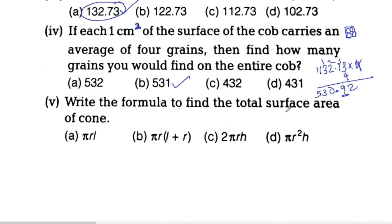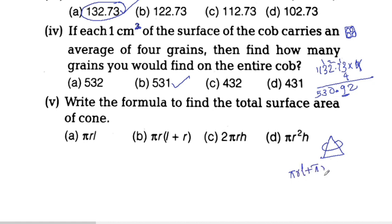Last question: write the formula to find the total surface area of a cone-shaped corncob. The total surface area of the cone is: curved surface area plus the base area, which gives TSA equals pi R L plus pi R squared, or equivalently TSA equals pi R times (L plus R).